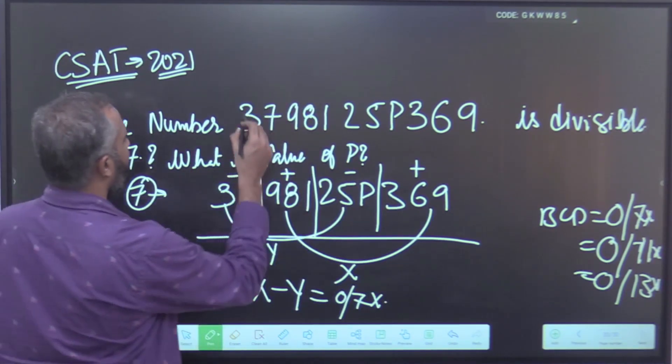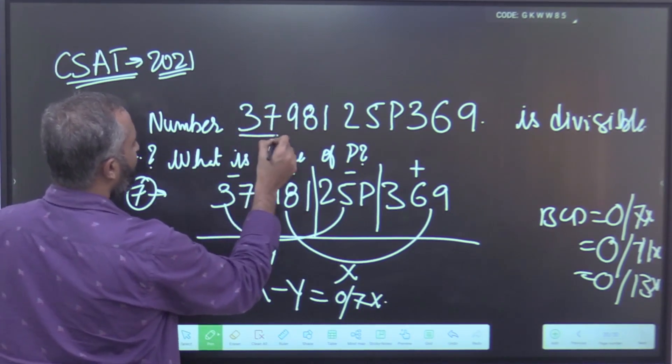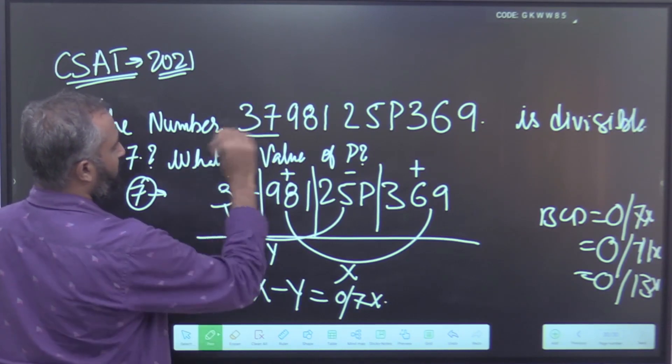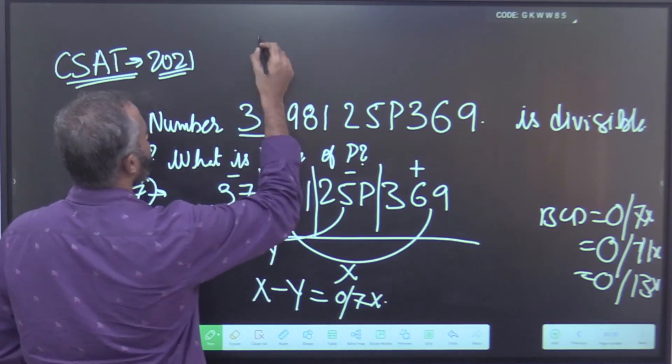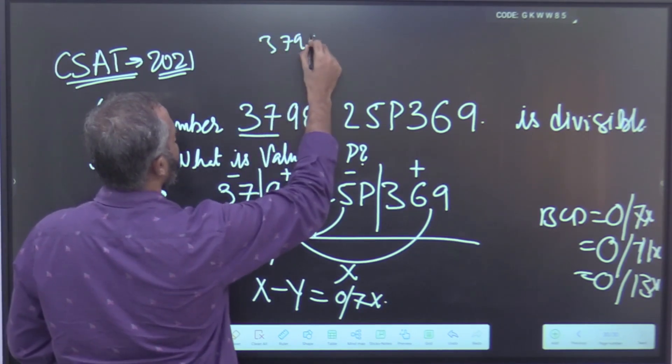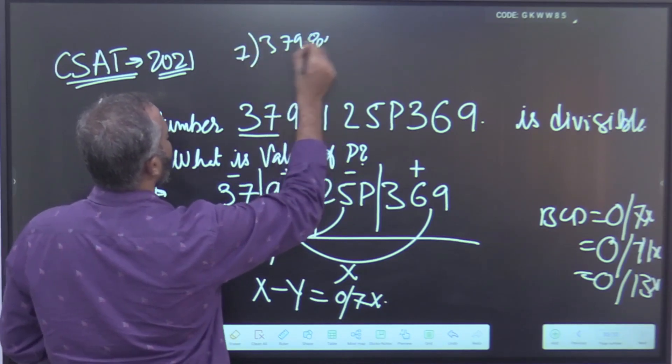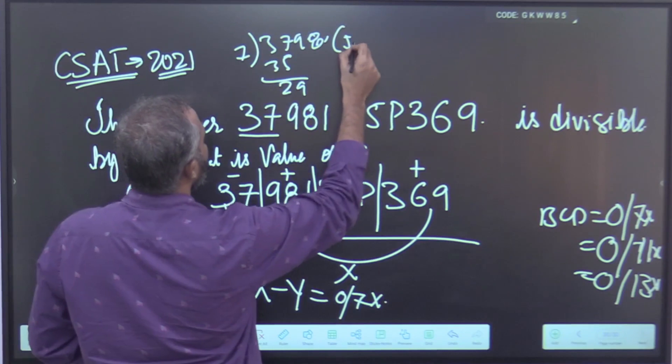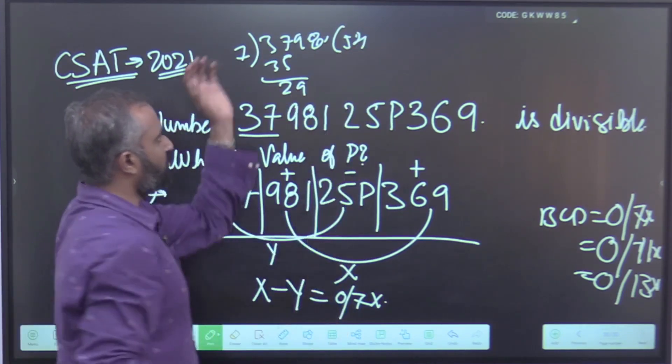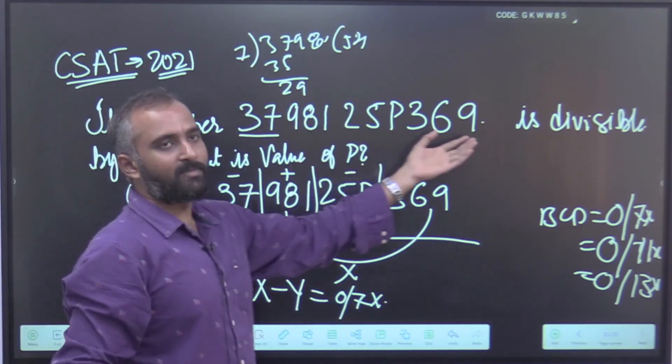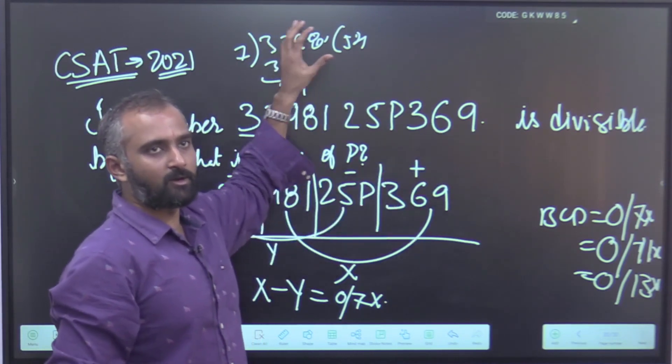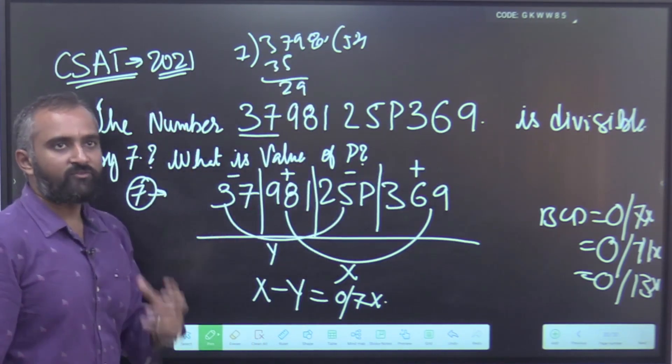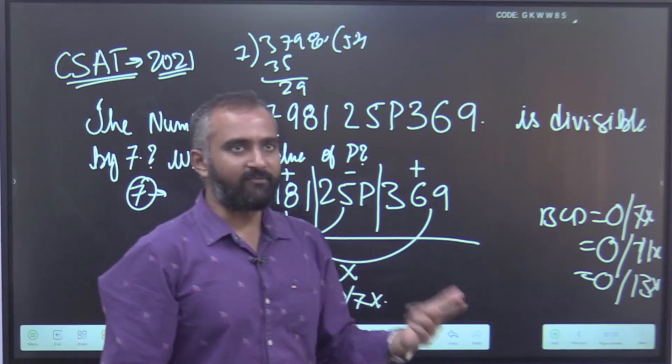Even if you do by normally what people do, they do by long division. Take every number and long division: 37981, suppose 7×5 are 35, next 2, next 9, 7×4 are 28, next one. And these are many numbers here, so it is becoming long.